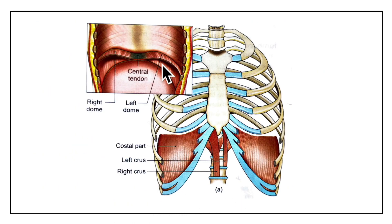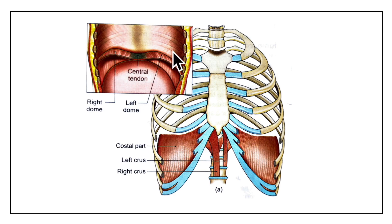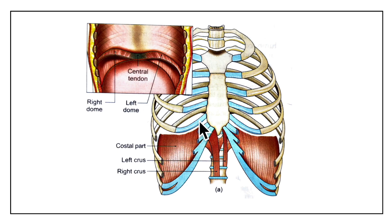Now let's learn about the muscle fibers of the diaphragm. From the circumferential origin, the fibers arch upwards and inwards to form the right dome and the left dome. The right dome is higher than the left dome. In full expiration, the right dome reaches the level of the 4th intercostal space, whereas the left dome reaches the 5th rib.